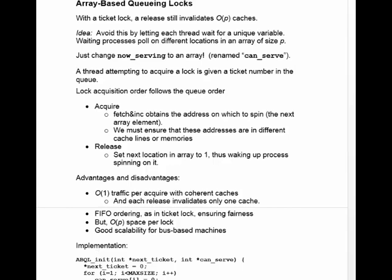Compared to ticket locks, we have these advantages and disadvantages. We have order-one traffic per acquire with coherent caches, because only one thread is waiting on a variable changing value. When that variable does change value, that's a single invalidation — the waiting thread recaches the block, finds that the value is one, and enters the critical section. Just like with a ticket lock, we have FIFO ordering.